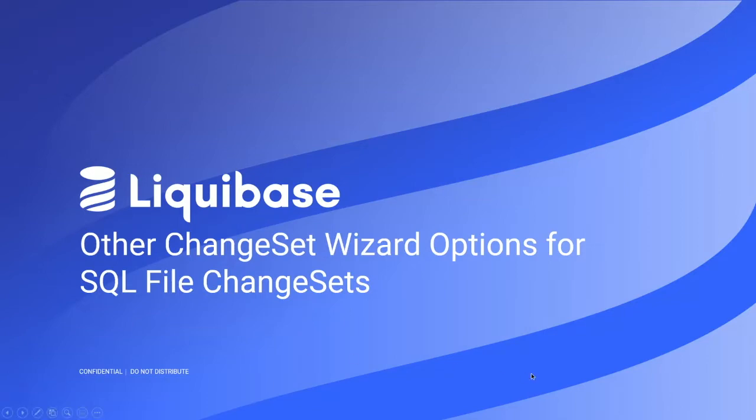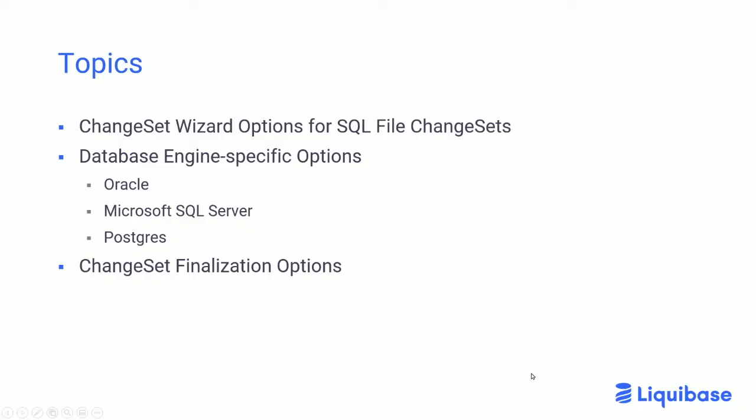We're going to cover the ones that are common to all SQL file change set types — certain fields that are consistent regardless of what database engine you're using. Related to that, we'll take a look at some of the engine-specific options for Oracle, SQL Server, or Postgres. And then we'll look at the options on the finalization pane of the change set wizard.